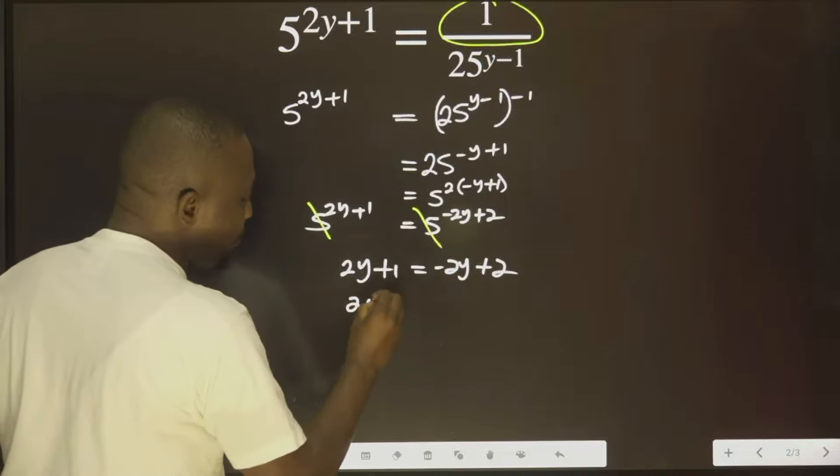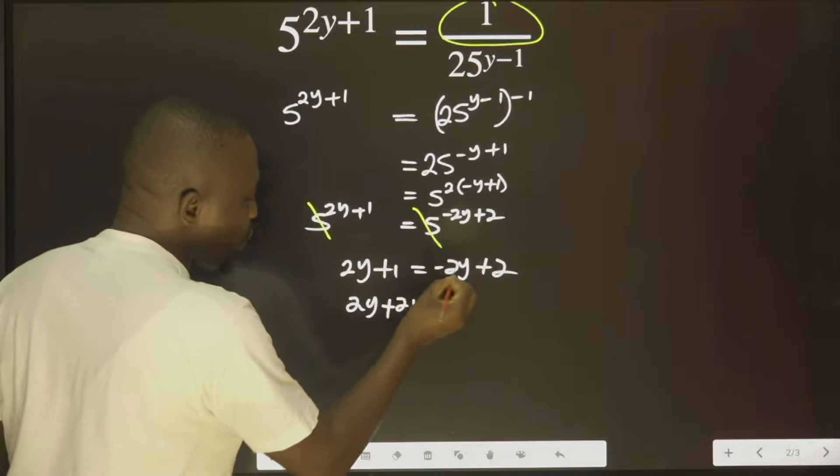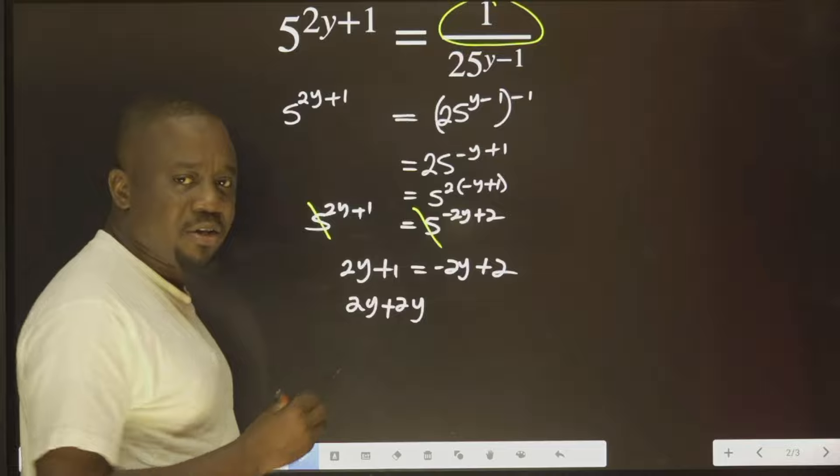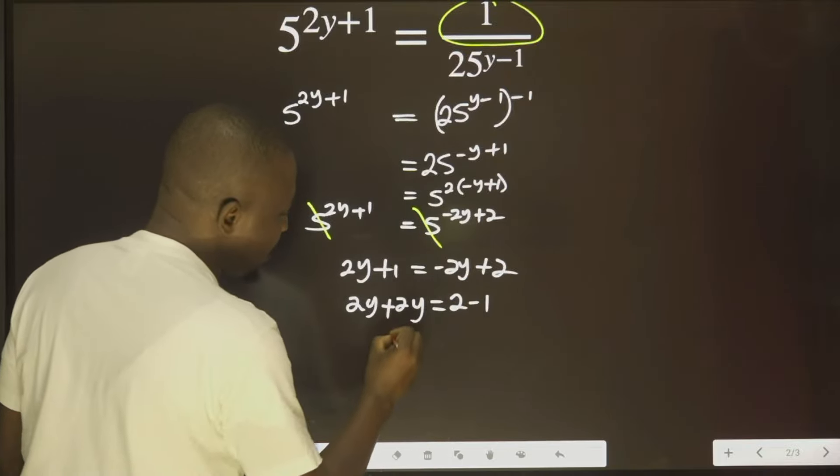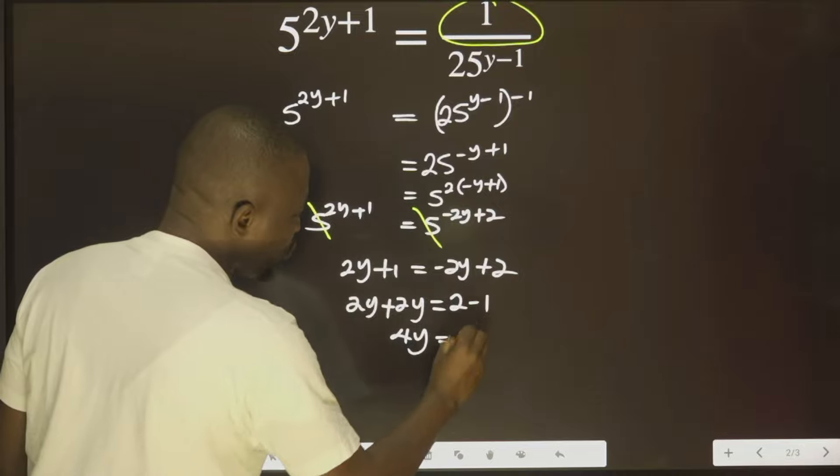This will come here to have 2y plus 2y, because while this is coming here, this minus becomes plus. Then this will come to this side to have 2 minus 1. That is 4y equals to 1.